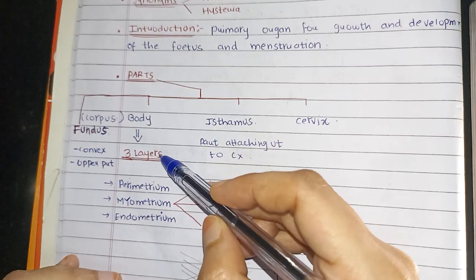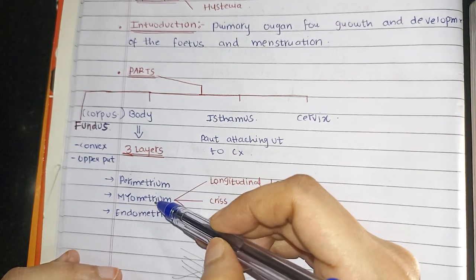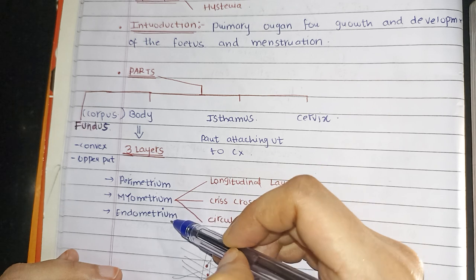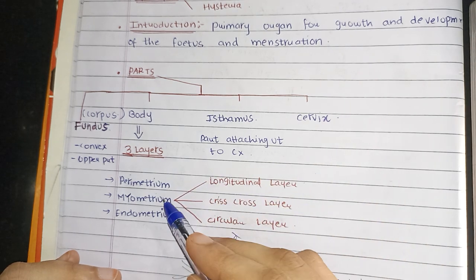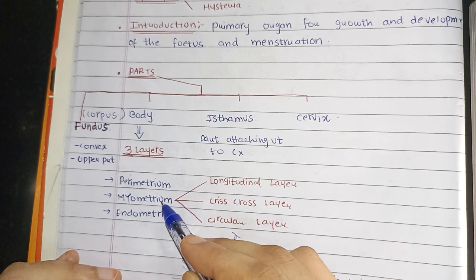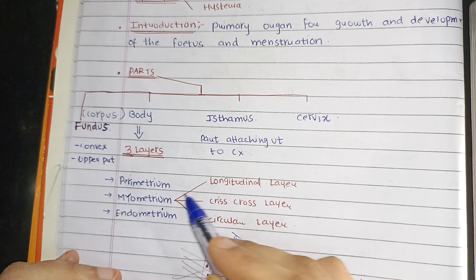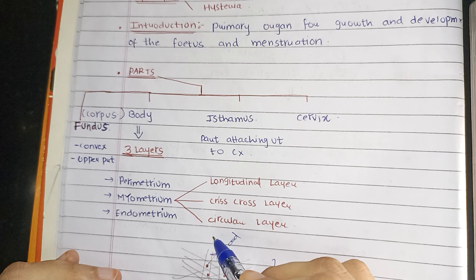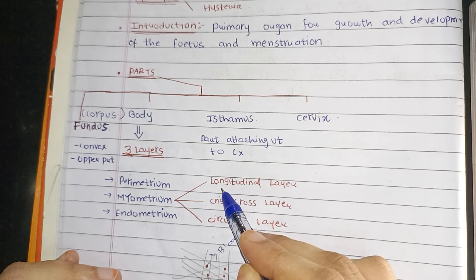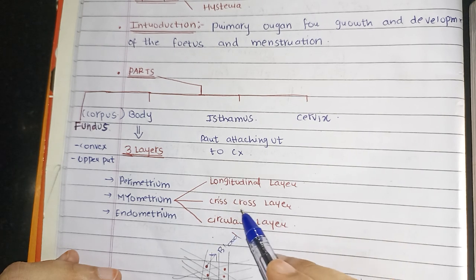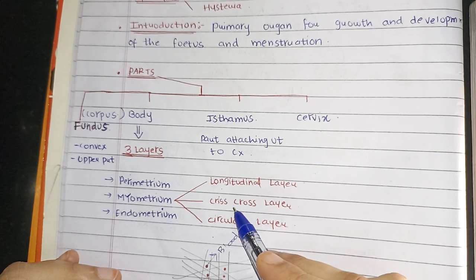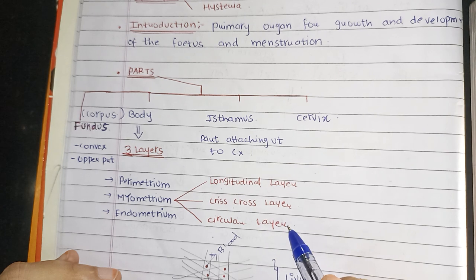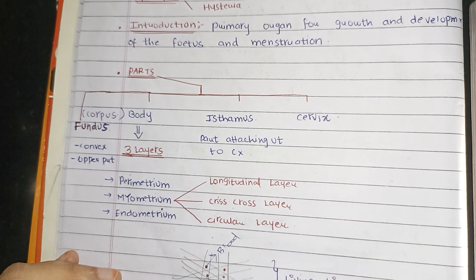Body has three layers: perimetrium, myometrium, and endometrium. The myometrium further has three layers of fibers — the longitudinal layer (outermost), the criss-cross layer (middle), and the circular layer (inner one).